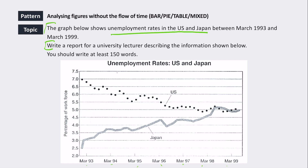The first thing I always tell people to check is the dates on the graph. It's between 1993 and 1999, so everything needs to be in past tense. When you go back and read your Task 1 essay again, double-check your tenses to make sure everything is in past tense.